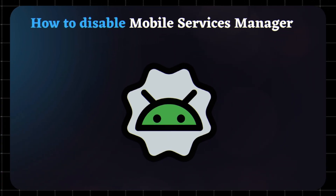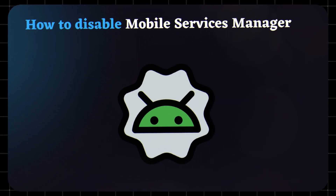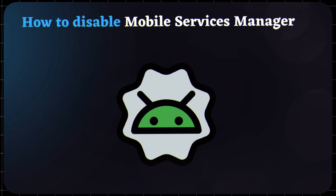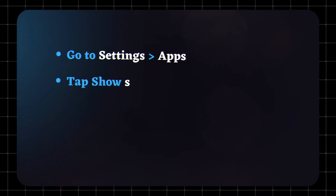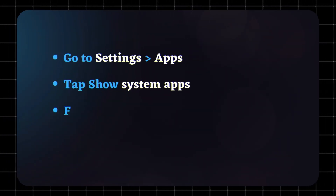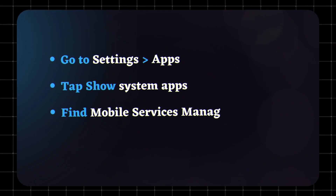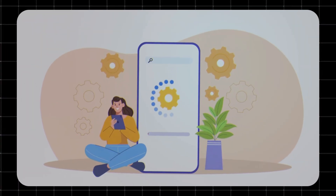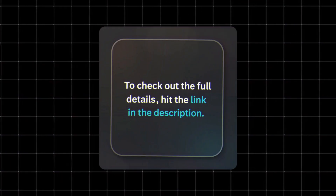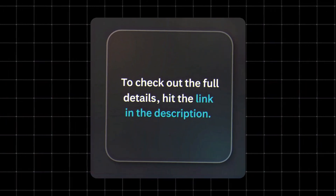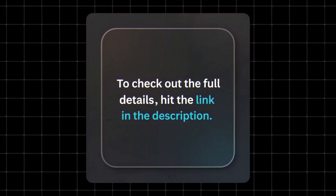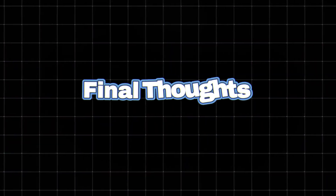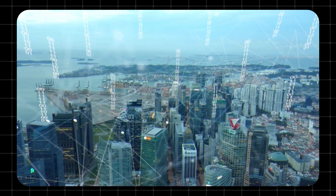How to disable the Mobile Services Manager app: The good news is that you can disable it in most cases. Here's how — go to Settings, then Apps, tap 'Show System Apps,' find Mobile Services Manager, and tap 'Disable.' Note: the exact steps may vary depending on your device and carrier. For more details, check out our full post linked in the description.